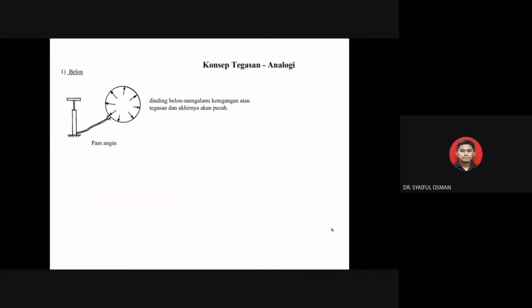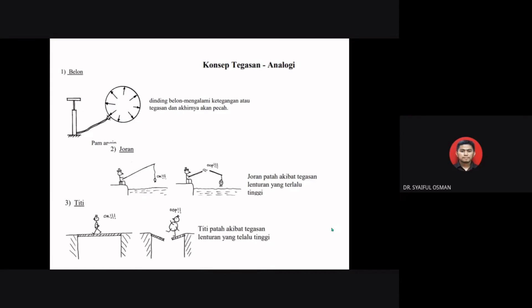As an analogy of stress: a balloon inflated with air will experience tension or tegasan and eventually burst. A fishing rod (joran pancing) will also break due to excessively high bending stress.